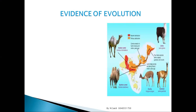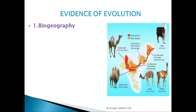The first evidence of evolution is biogeography. 'Bio' means life and 'geography' means distribution in different locations, so biogeography refers to life distributed across different locations.